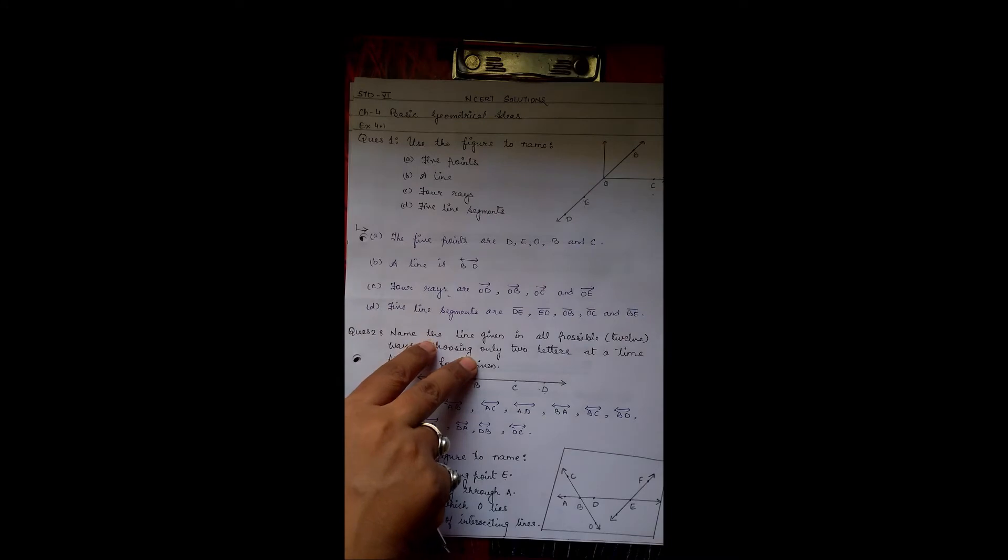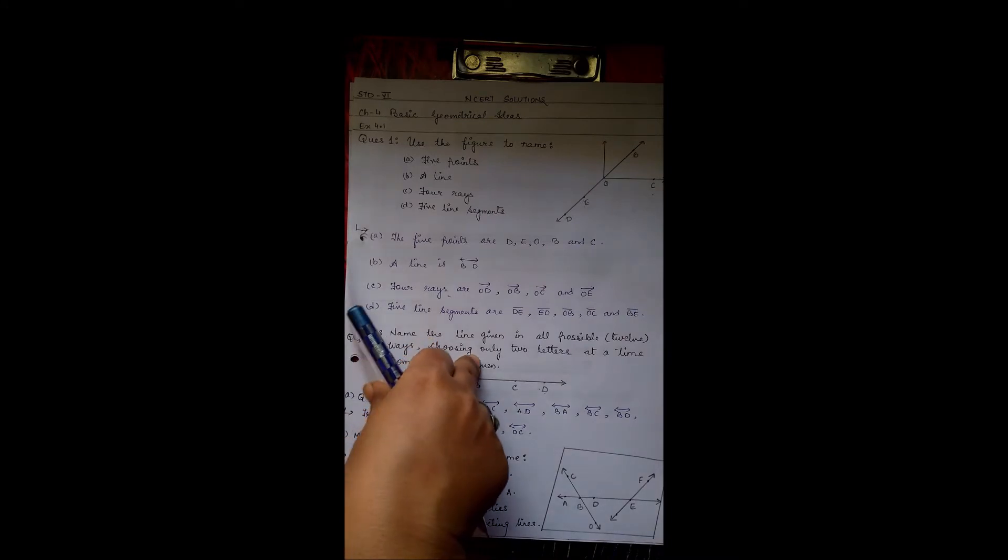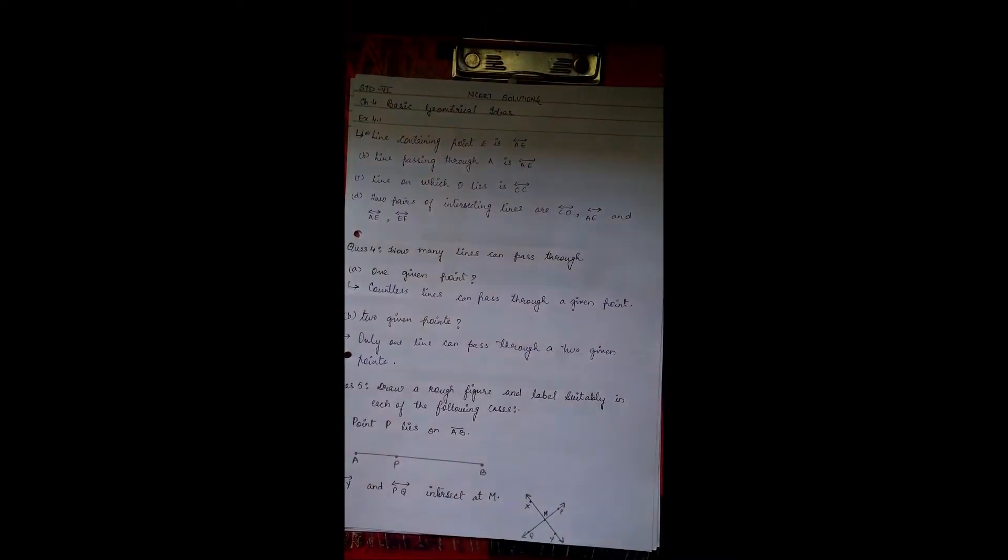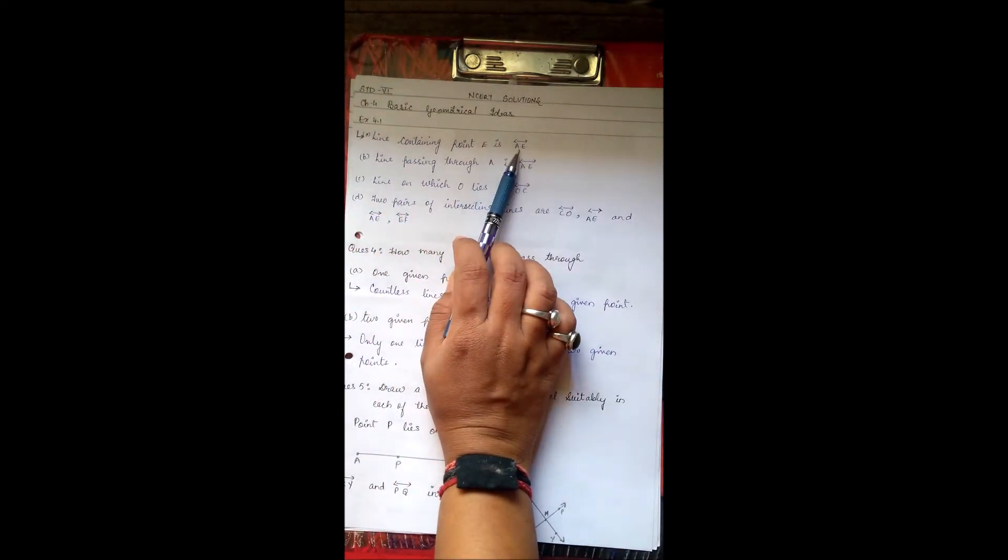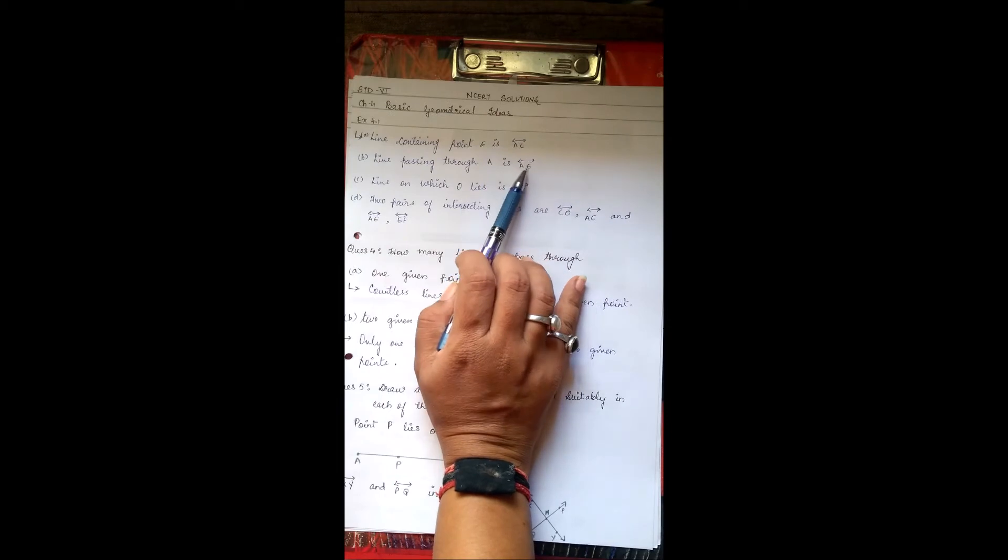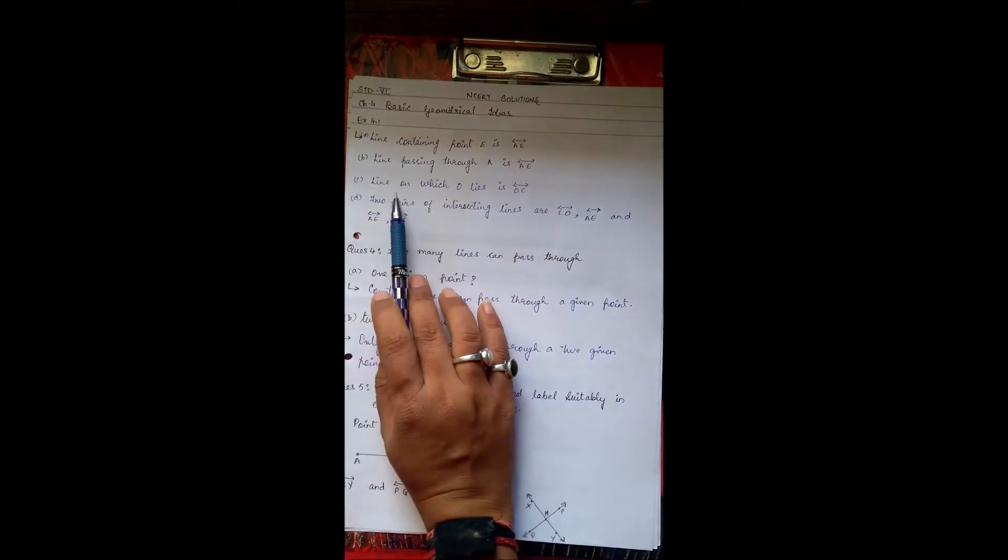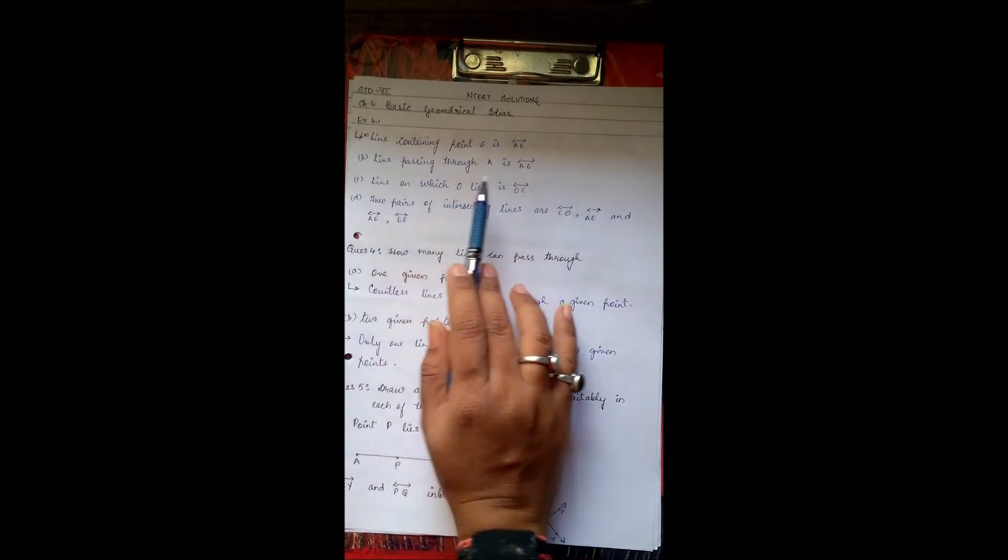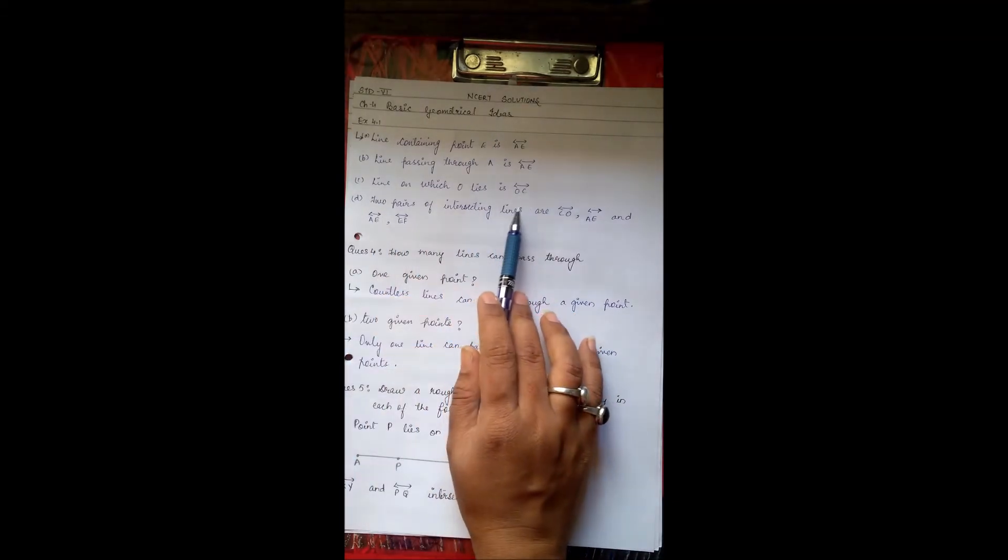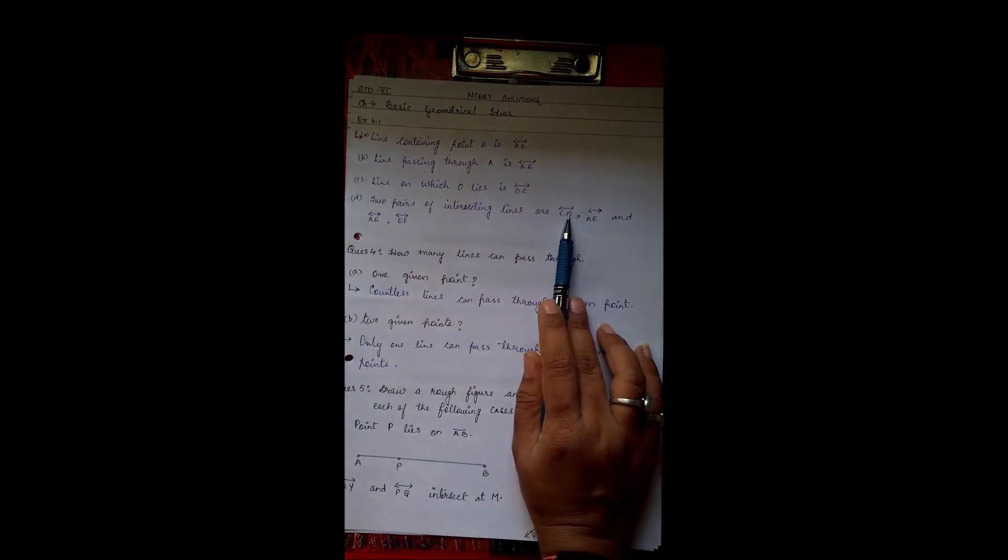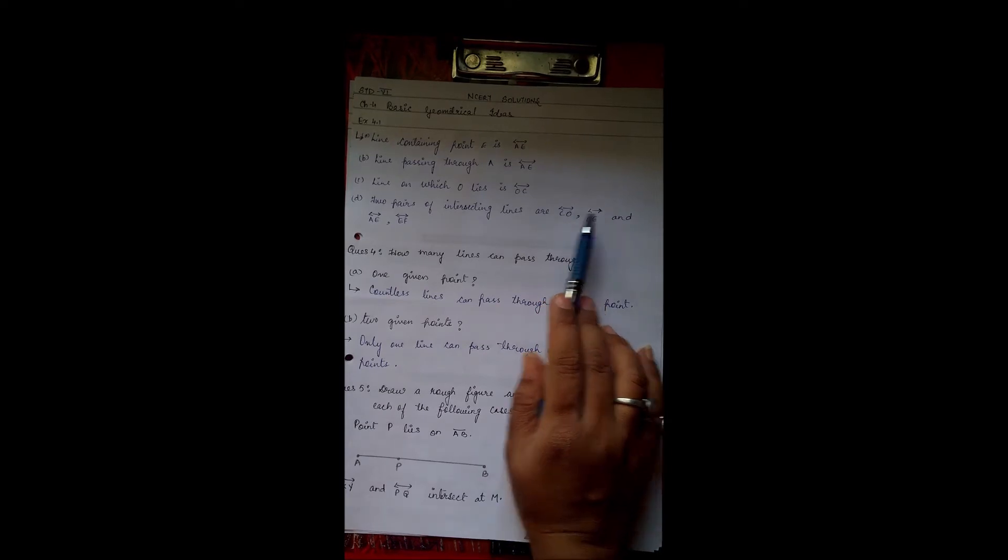Now let's see the answer. The line containing point E is line AE. Line passing through A is AE. Line on which O lies is line OC.